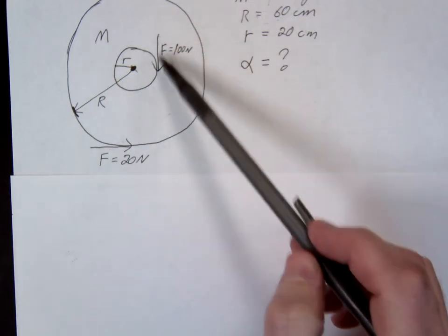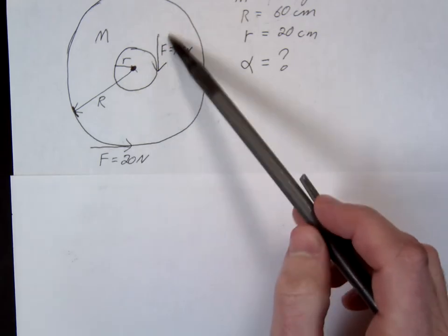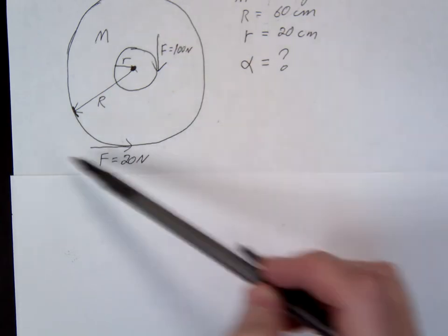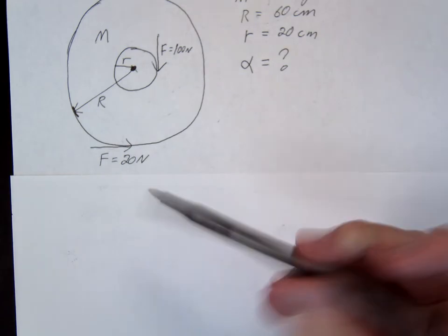Imagine a bike - this might be the gear of the bike, and you apply force with the chain along here. Then it's going to spin this way, and there's friction opposing it. That's the picture.